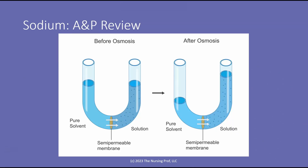So what is sodium doing in the body? We mentioned that it's the primary extracellular cation — sodium is responsible for moving fluid in the body. Looking at these two pictures, we have before osmosis: our solvent and our solution with a semipermeable membrane. We can think of this the same way we think about a cell. Notice after osmosis, fluid moves to where the sodium is and dilutes it. So now there's more fluid on the solution side, less on the solvent side.